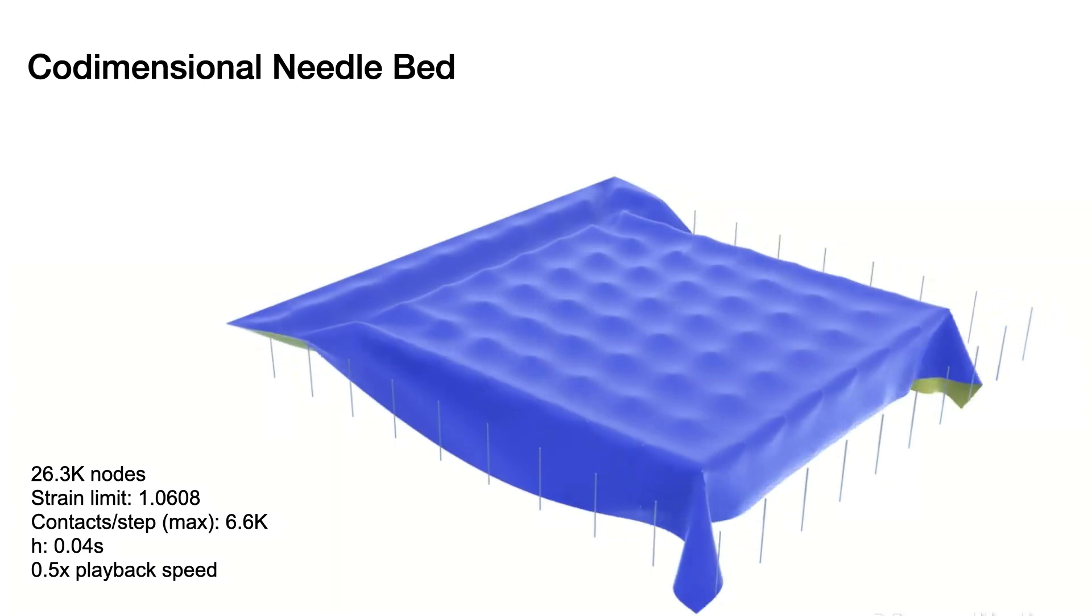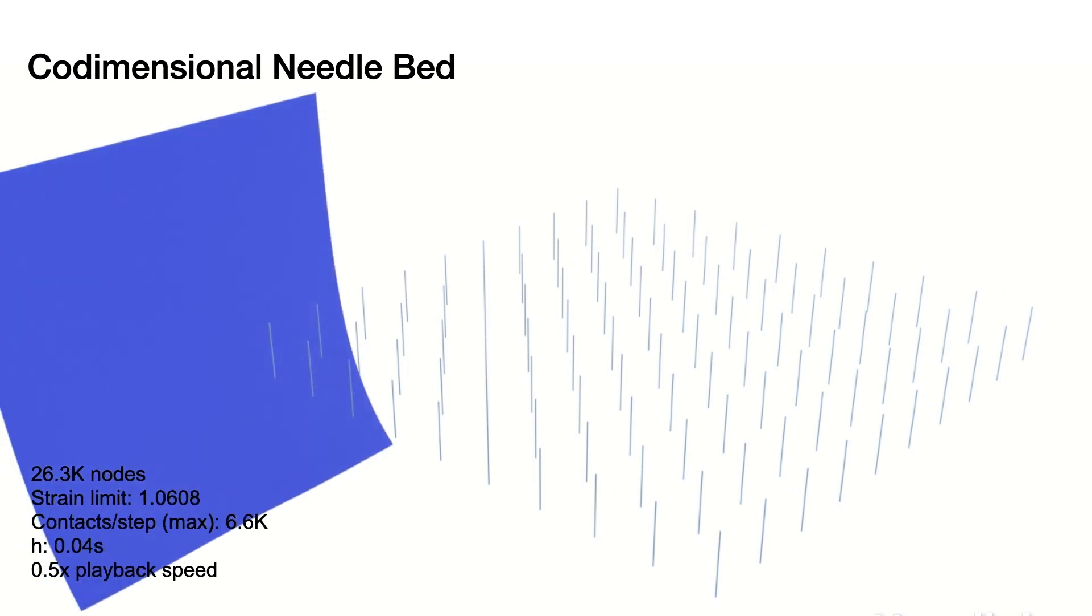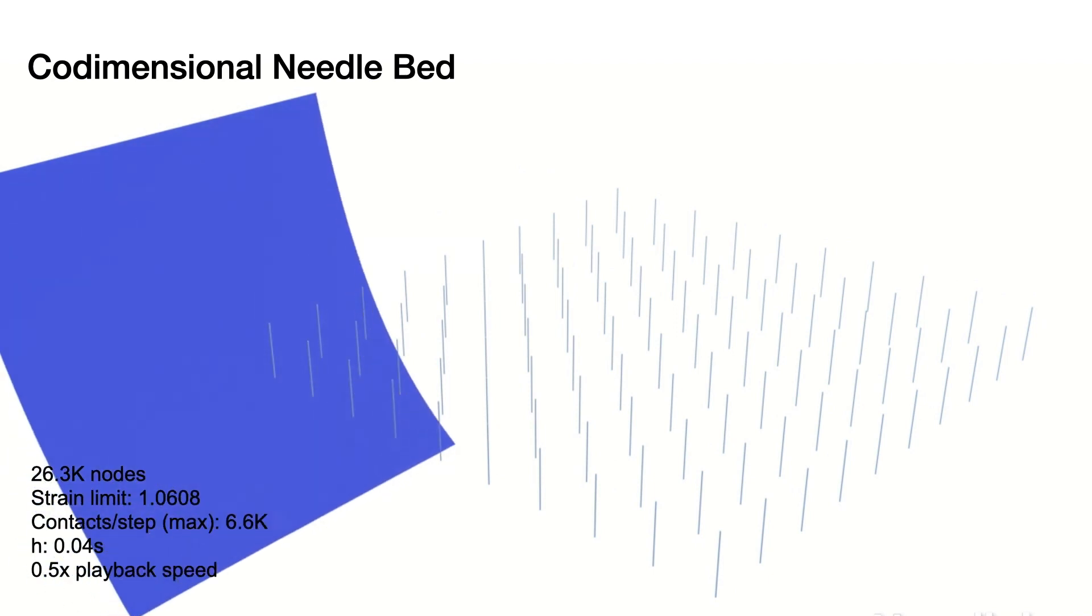CIPC preserves exact strain limits and ensures no intersections even for challenging cases, for example here, as we rapidly pull a cloth across a bed of edge segments.